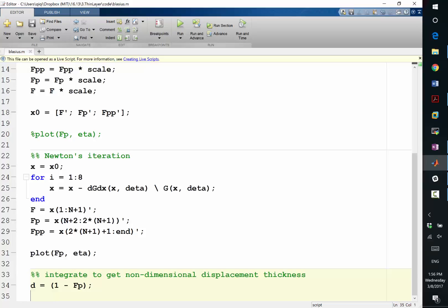So you have the delta y's, and you have the list of fp's, right? d eta, right. So just use 0.5 times d eta.